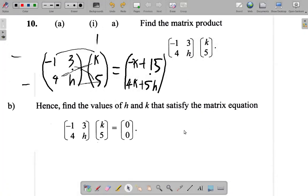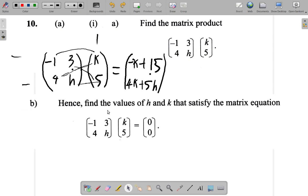Next part of the question, question 10. Hence, find the values of H and K that satisfy the matrix equation. So this is the same thing, except you have it equated to 0.